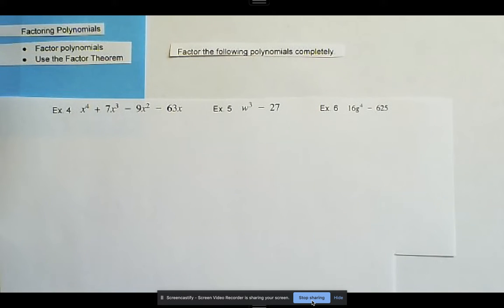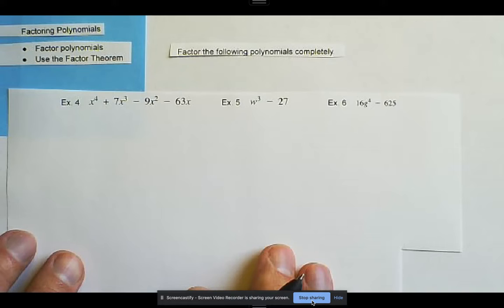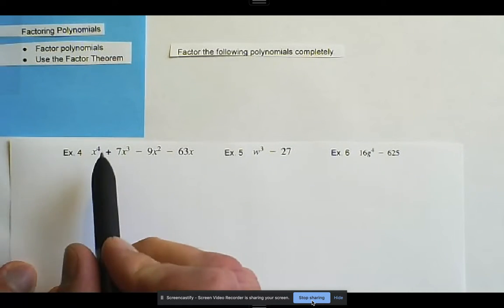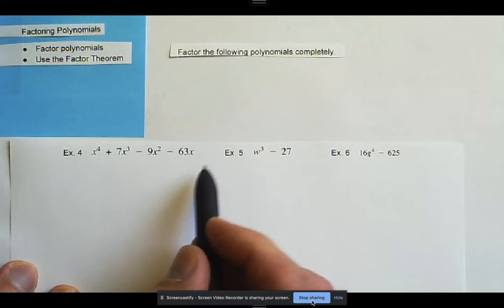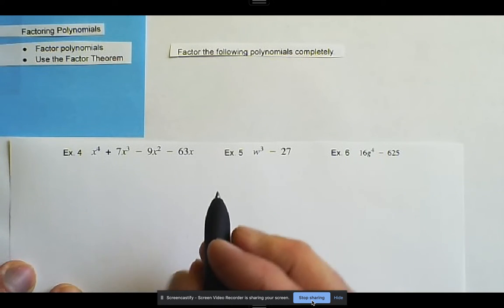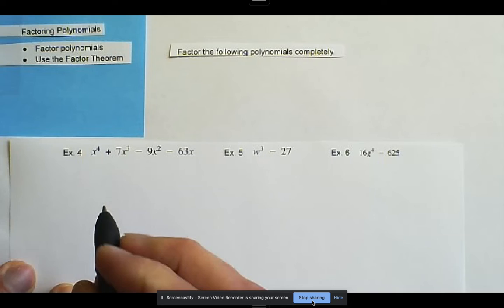Here we are going to factor polynomials completely, and for our first example, example four, we notice that we have four terms.